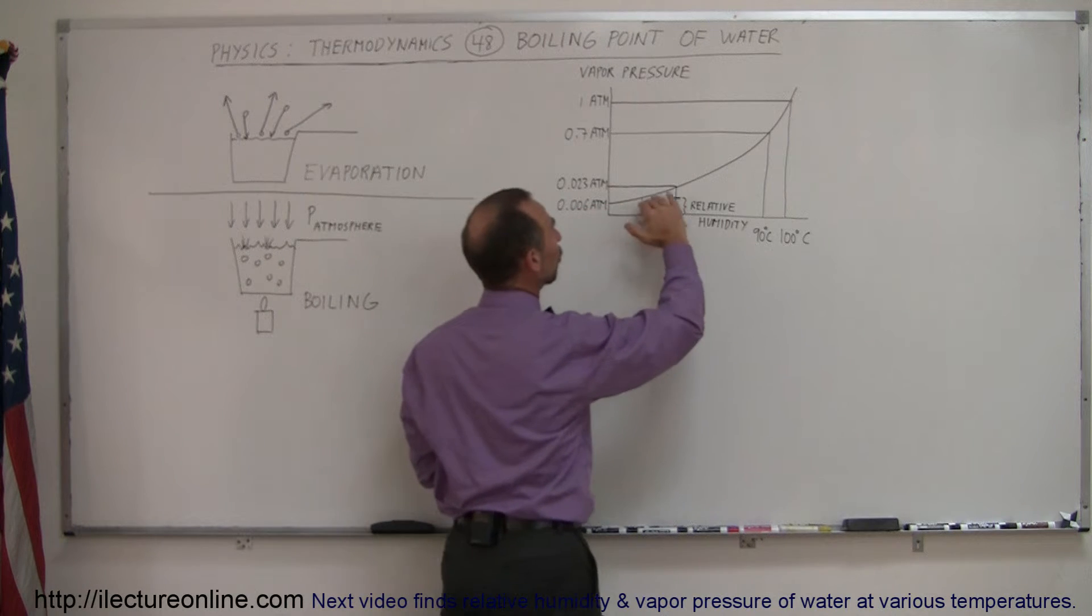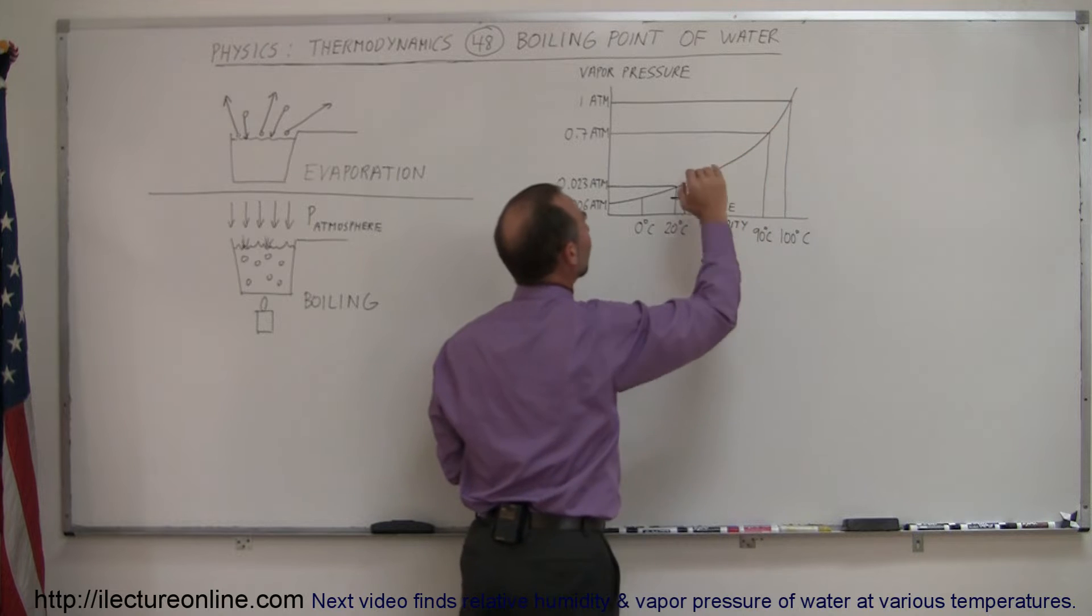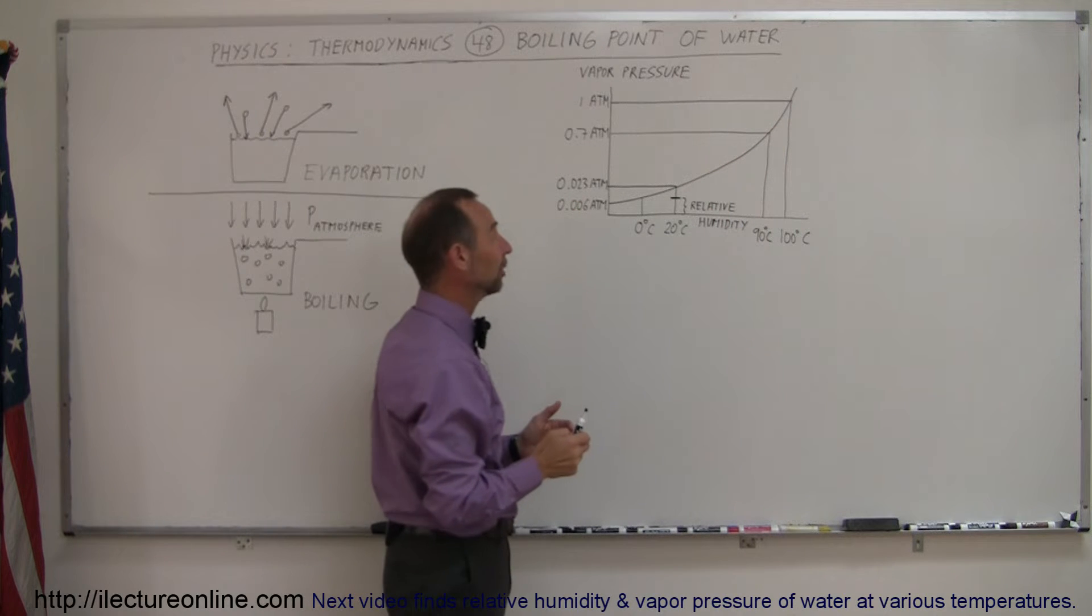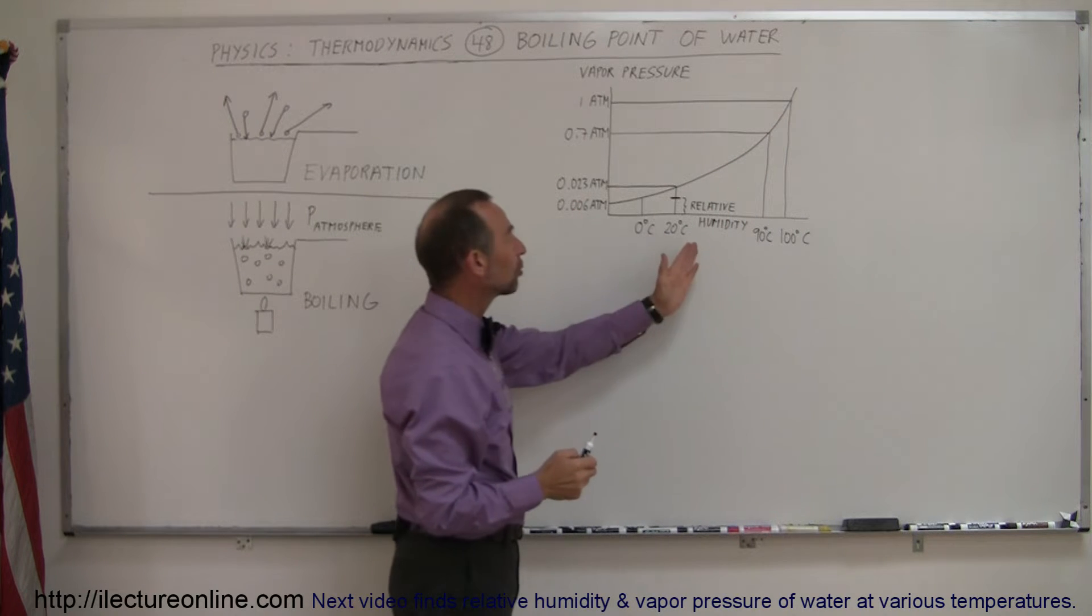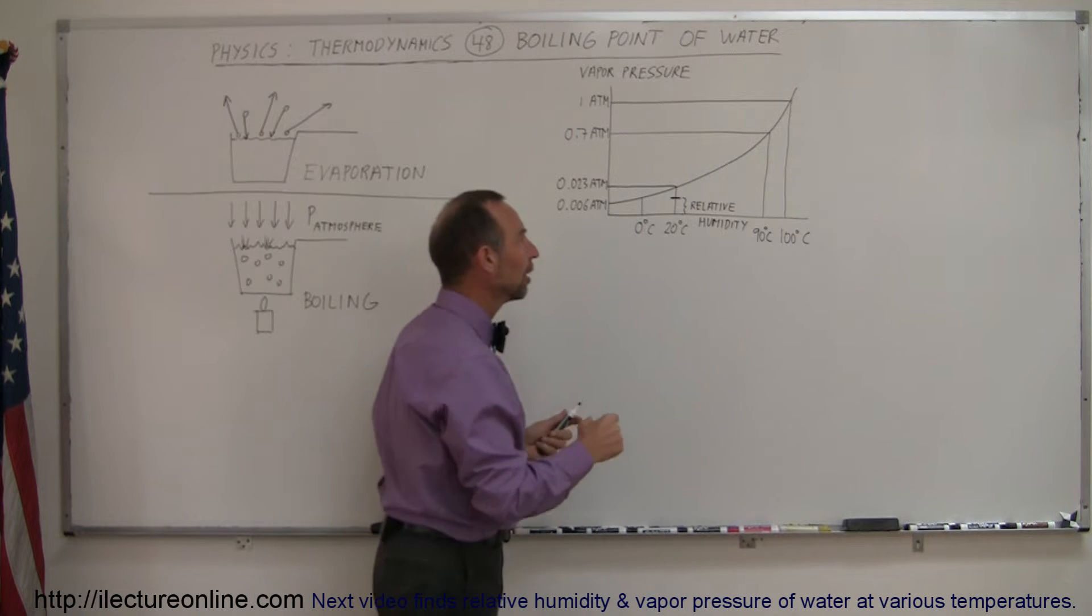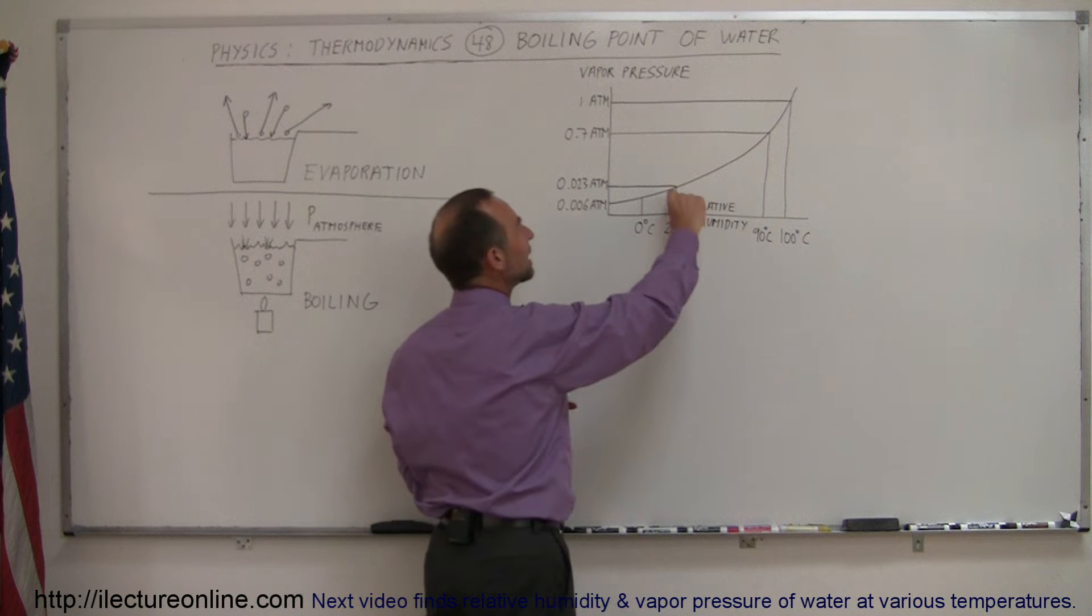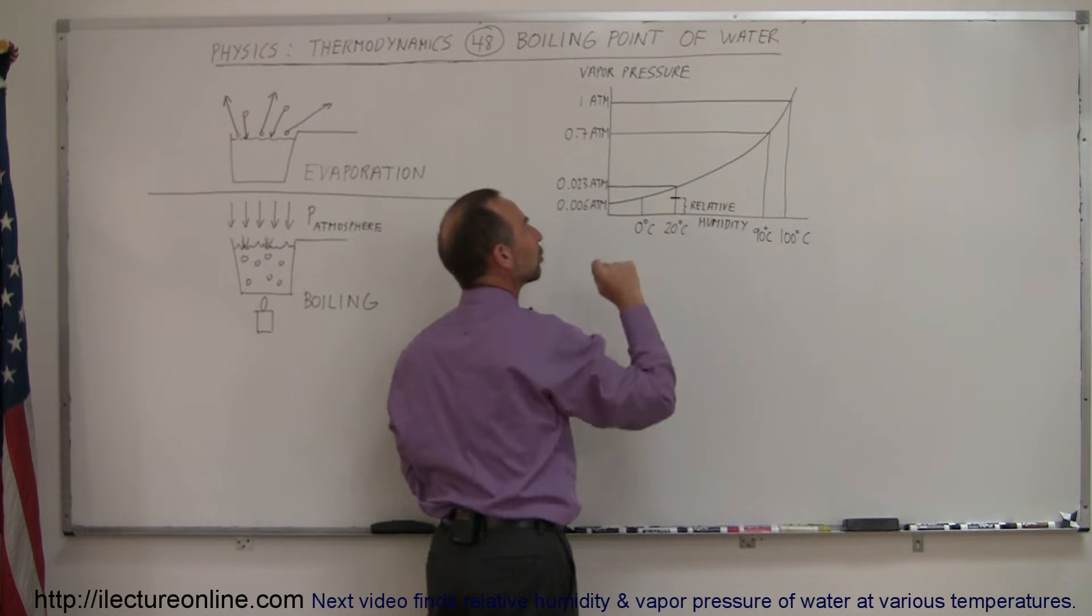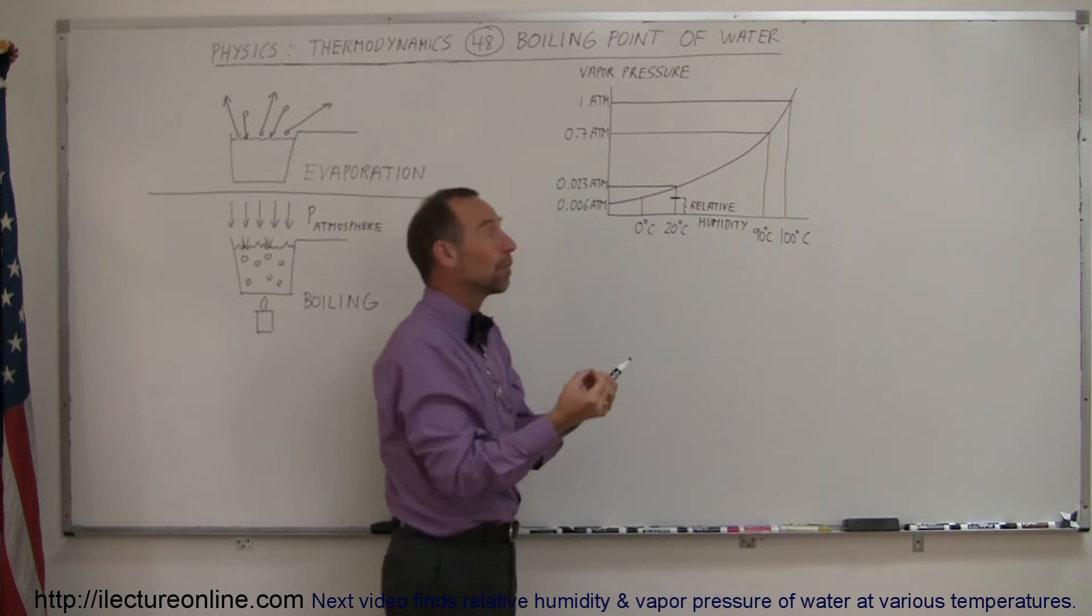We have a chart here that shows the partial vapor pressure of water with respect to the atmosphere. At different temperatures the partial vapor pressure can be higher or lower. If the amount of humidity in the air is less than what the air can hold, then there's room for more molecules and evaporation can occur.